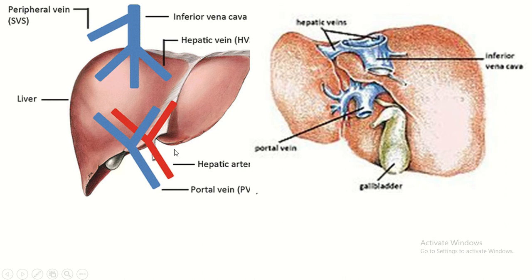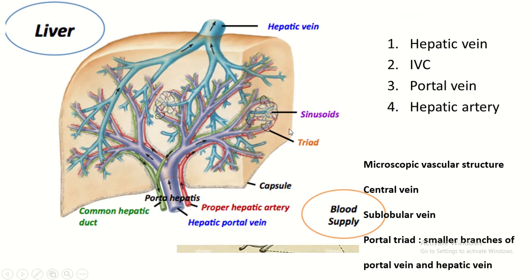This is the liver. This is the porta hepatis — through this opening the portal vein and the hepatic artery enter. This is the groove for the inferior vena cava, and this is the hepatic vein which drains into the inferior vena cava. The hepatic vein is a tributary of the inferior vena cava.